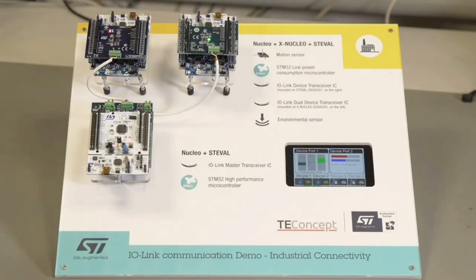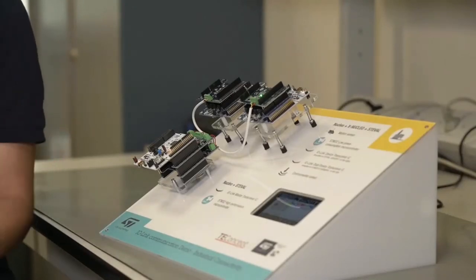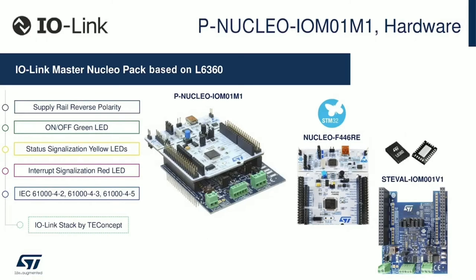The demo we are presenting today is basically composed of two masters controlling two slaves. The master board is a combination of a nucleo board — in this case with a core M4 microcontroller — and what we call a pin-nucleo board, that can be easily plugged to the nucleo. It has the actual IO-Link master chip, the L6360. We can stack more than one master, as in this case, both controlled by the same nucleo board.